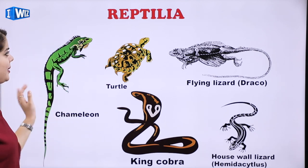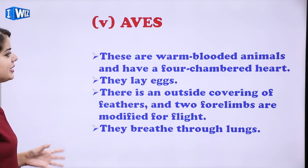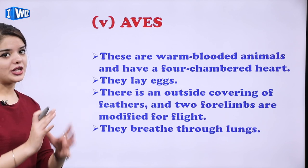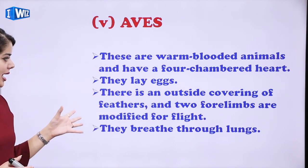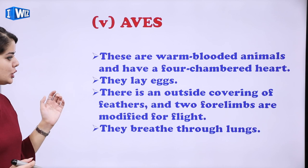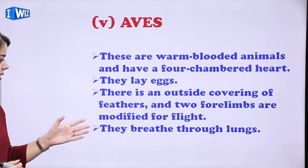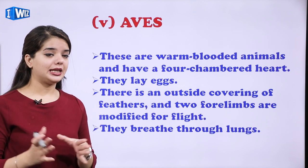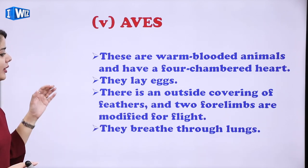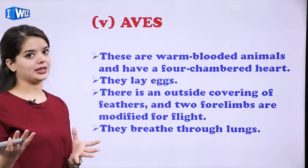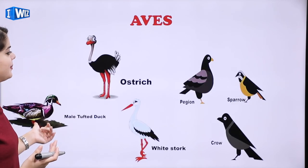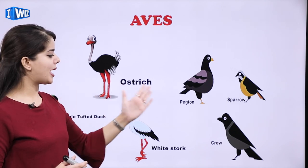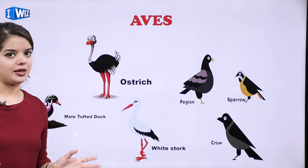Then we have Aves. These are warm-blooded animals and they do have a four-chambered heart. They lay eggs. There is an outside covering of feathers and two forelimbs are modified for flight. They breathe through lungs. Examples of Aves are ostrich, pigeon, sparrow, and crow — these are all birds.